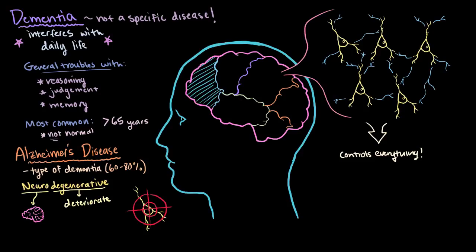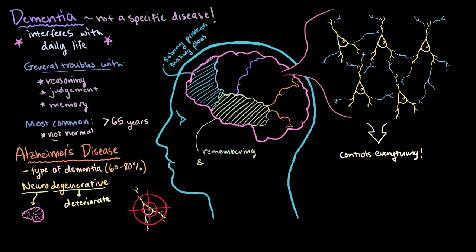For example, if nerve cells in this area of your cerebrum are affected, you might have trouble solving problems, or making plans, because these cells help you do those things. Or if the neurons in this area are affected, you might have problems remembering something, or storing new memories.